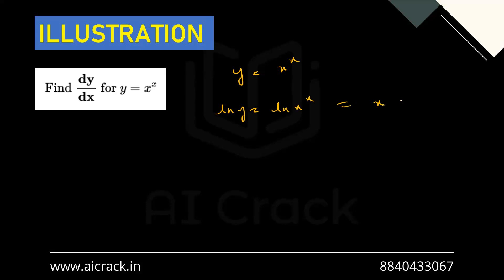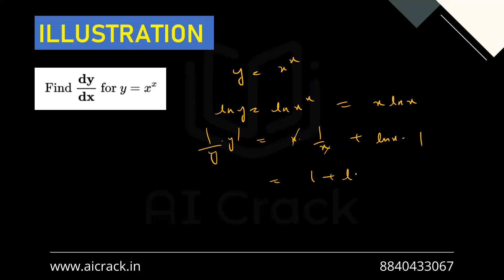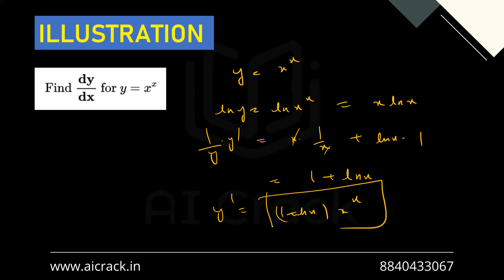Using the log property, ln y = x·ln(x). Differentiating both sides: (1/y)·y' = x·(1/x) + ln(x)·1, applying the product rule. The x terms cancel, giving 1 + ln(x). So y' = (1 + ln x)·y = (1 + ln x)·x^x. This is a very standard derivative to remember.